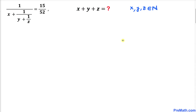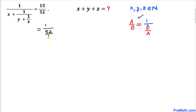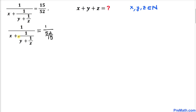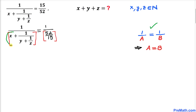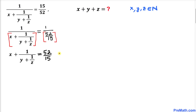Let's get started with the solution. First, let's focus on the right hand side fraction 15 divided by 52. We can rewrite this as 1 divided by (52 divided by 15). The left hand side stays the same. Now let's focus on the denominators — I'm going to put them in brackets. We can equate these denominators since the numerator is 1 on both sides. Let's call this equation number one.